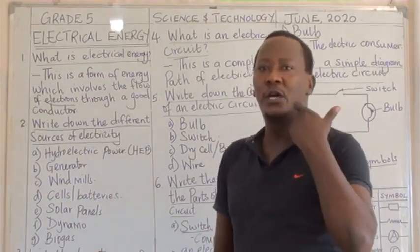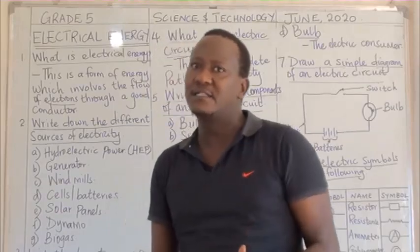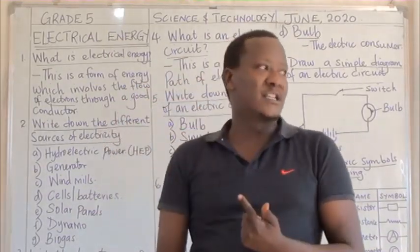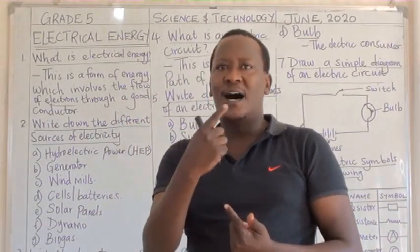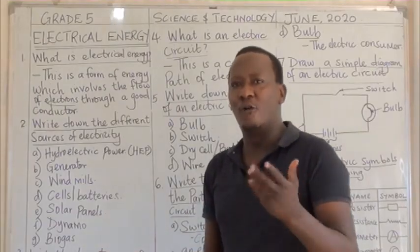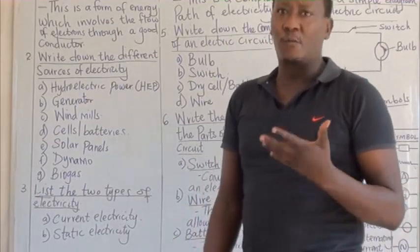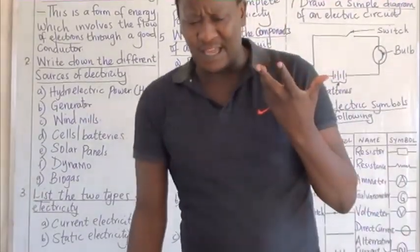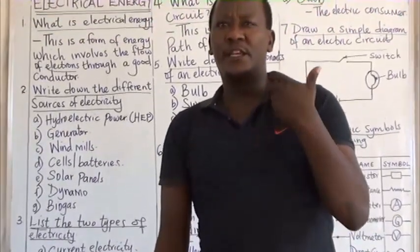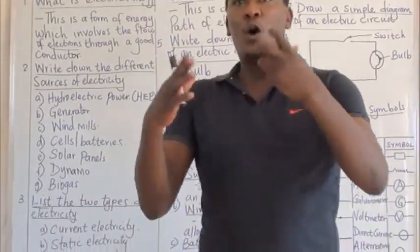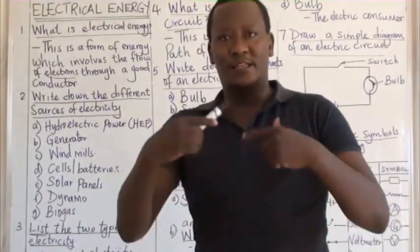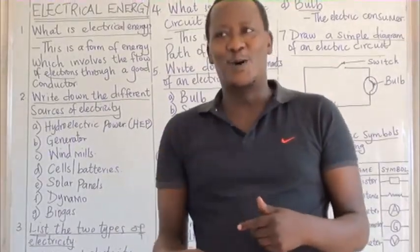Next, we have what we call a dynamo. A dynamo is a device used on bicycles. It has magnets with coiled wires such that when the dynamo rotates it produces electricity. Lastly, we have what we call biogas, which comes from waste products produced by animals like feces. If you collect them, there is a way they are converted into electricity.